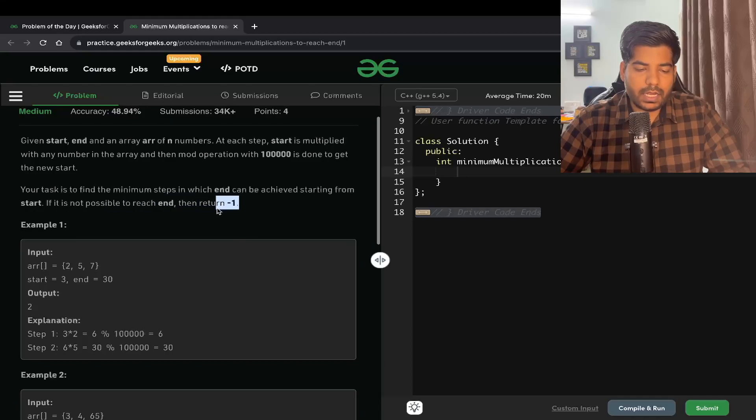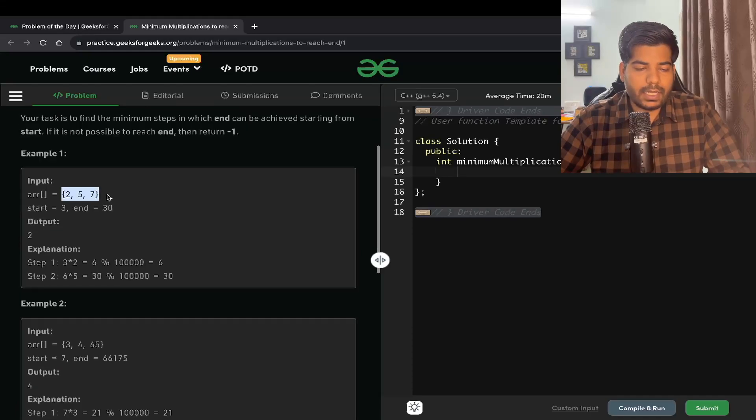If it is not possible to reach end, then we have to return minus one. For example, here our array is 2, 5, 7 and start is 3 and end is 30. So how can we reach from 3 to 30?